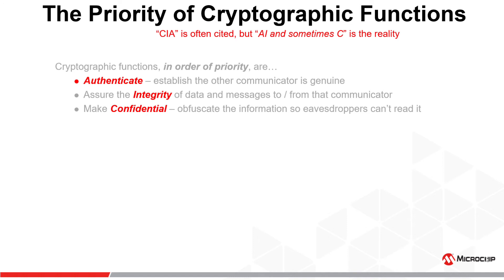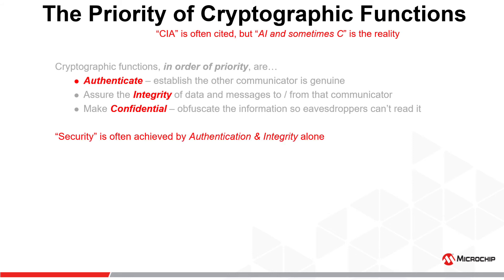Now let's consider the actual functional priority for that trilogy. It's actually A, I, and sometimes C. In practical applications of cryptography, we first authenticate a message, then we check its integrity. Finally, we make the message confidential by obfuscating it in some way, but only if the payload has value and we need to protect it. True security is most often attained by applying only the first two: authentication and integrity.